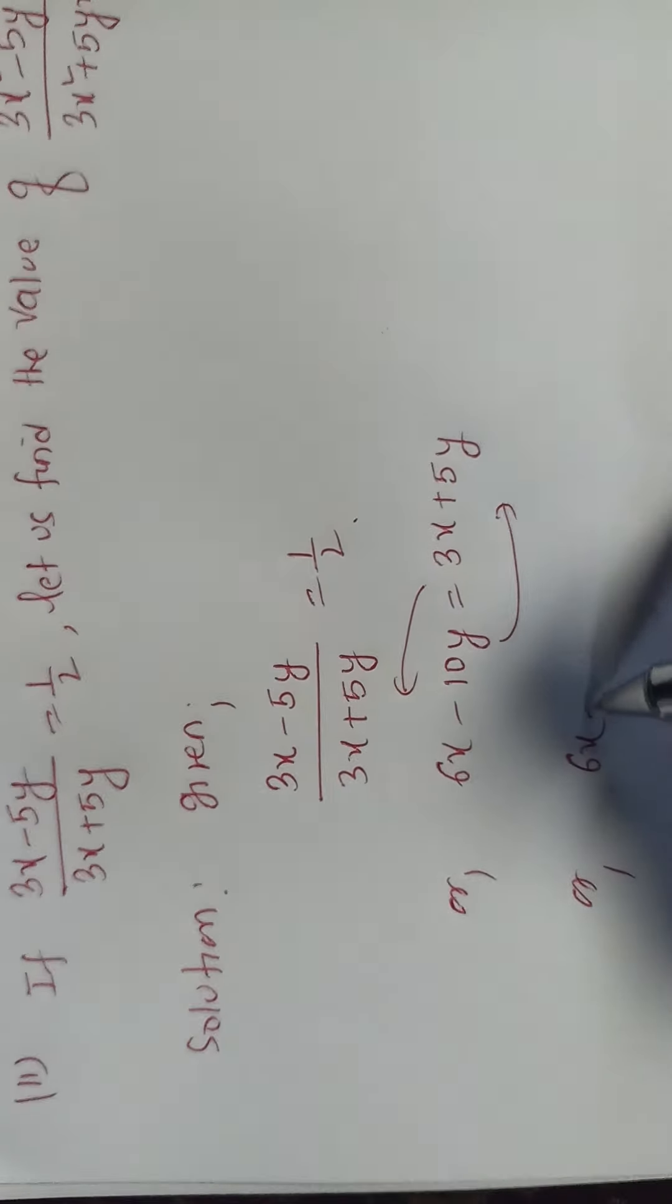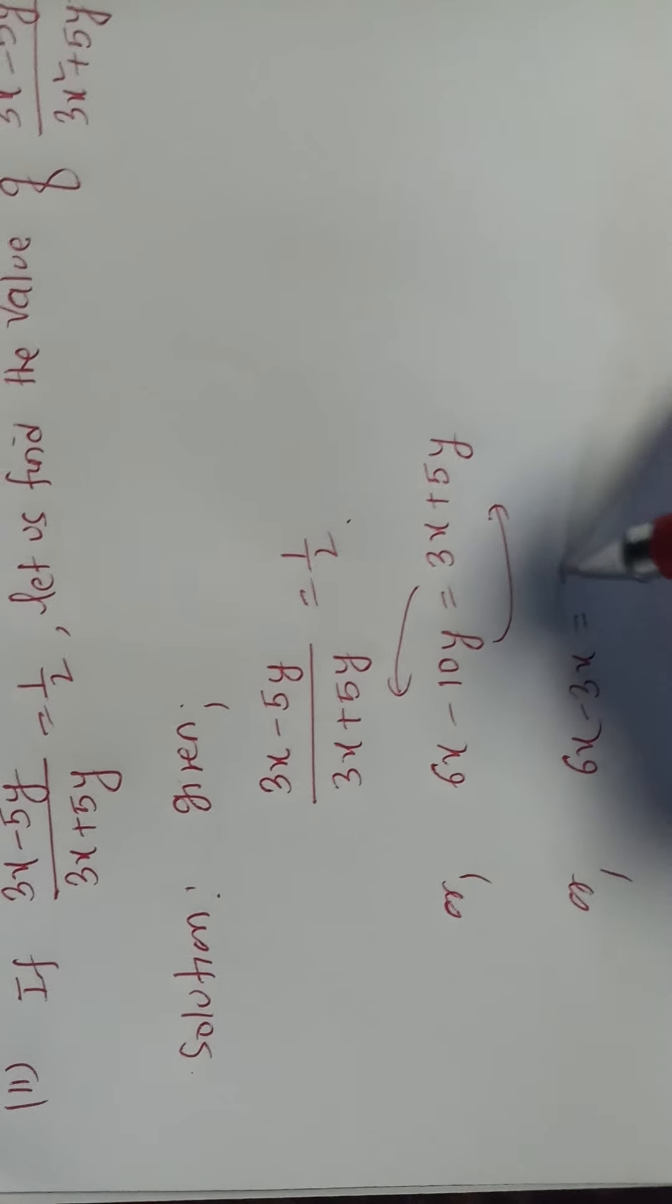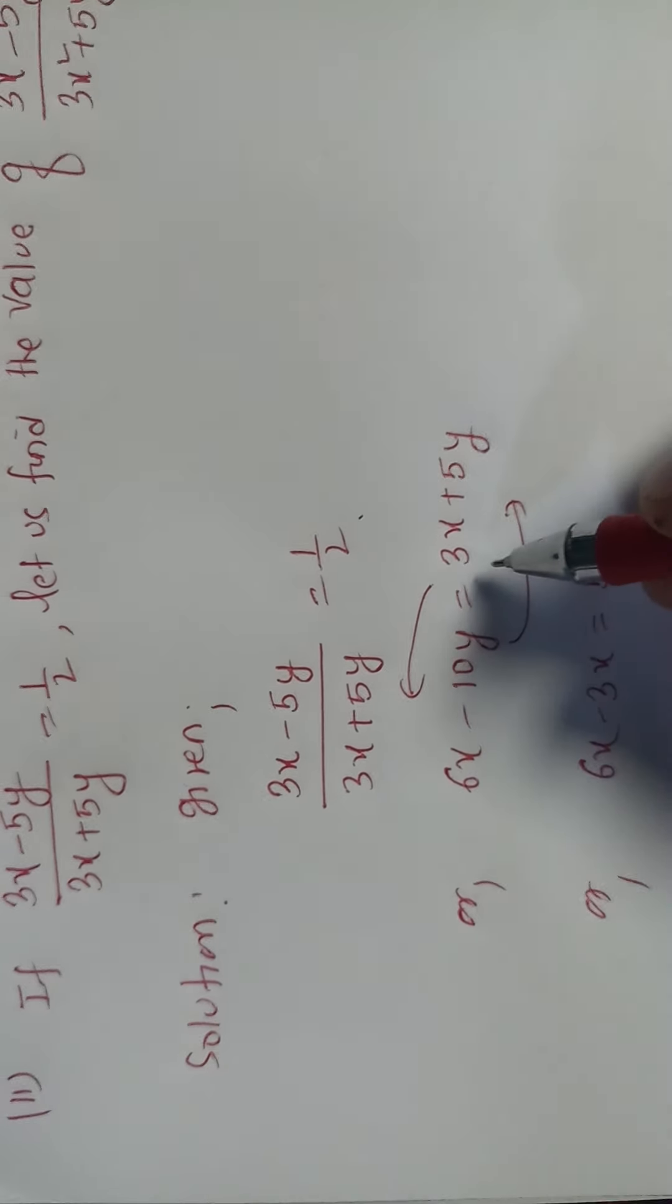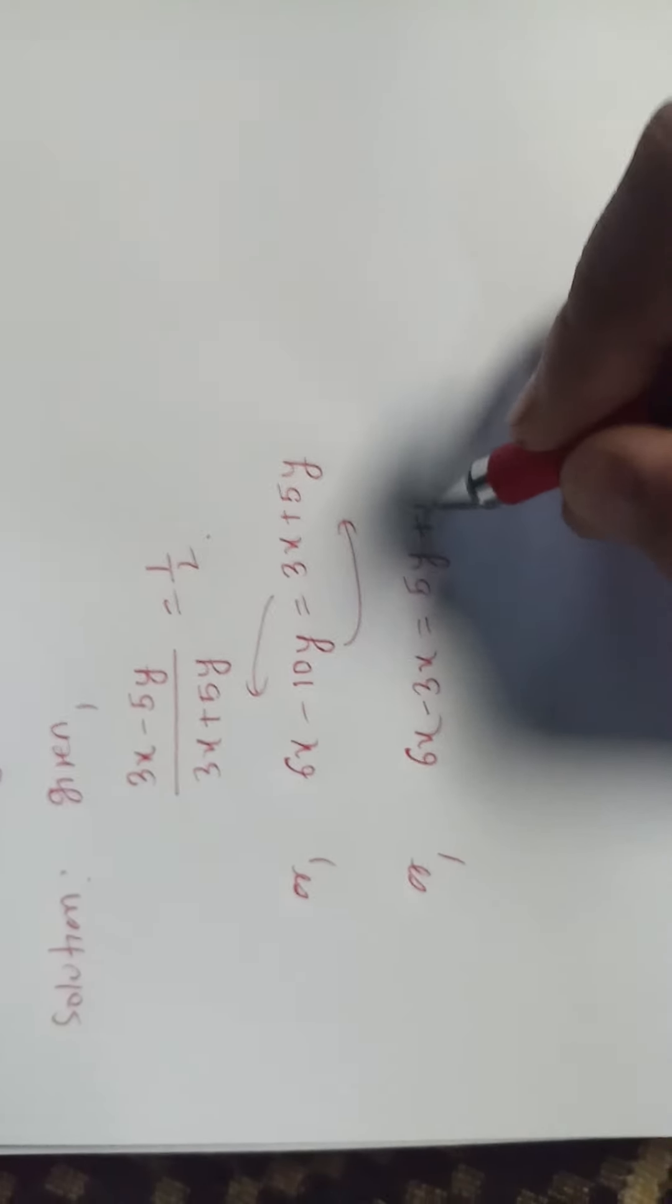6x and 3x is equal to minus 3x. 5y is equal to minus 10y is equal to plus 10y.